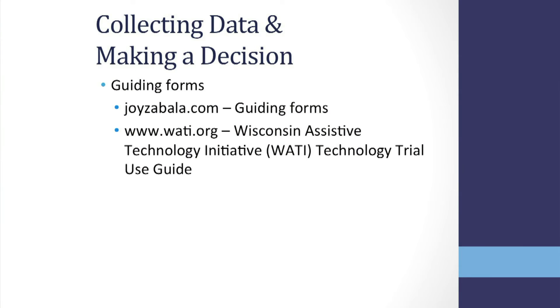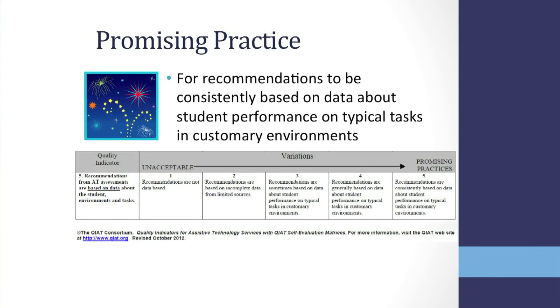Your school may also need assistance with collecting trial data and making a decision about specific AT. Visit joyzabala.com for guiding forms, as well as www.wati.org for the Wisconsin Assistive Technology Initiative Technology Trial Use Guide. Promising practice is for recommendations to be consistently based on data about student performance on typical tasks in customary environments.